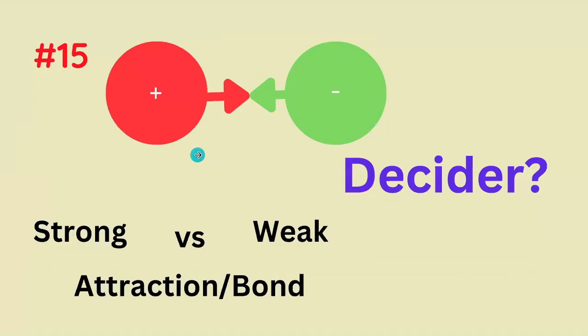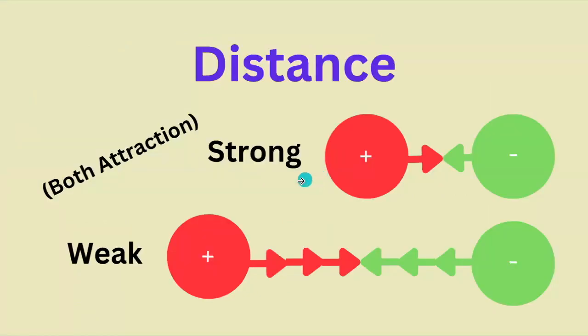What determines the strength of an attractive bond? The correct answer is distance. If it's really short, it's going to be a strong bond. If it's really long, it's going to be a weak bond.